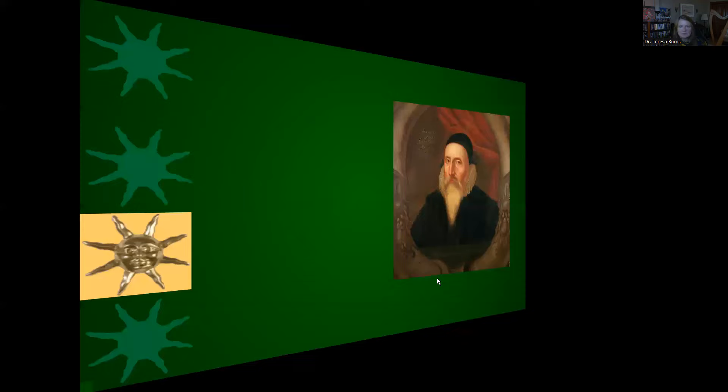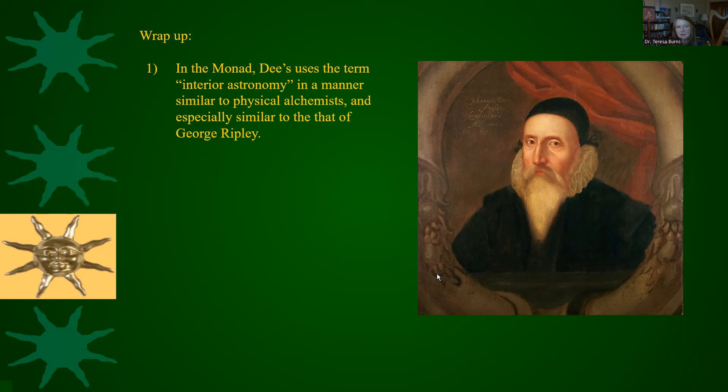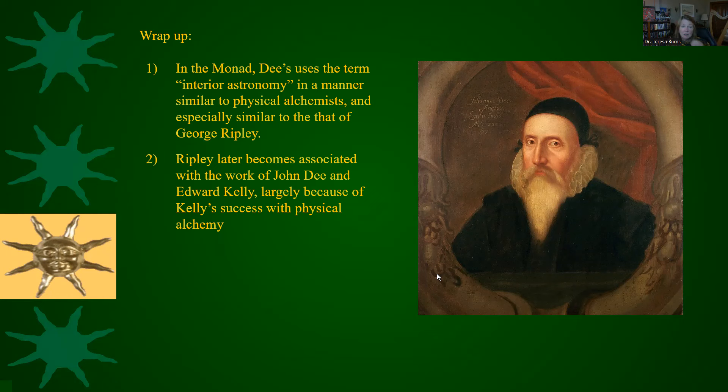What should one take away from this rather advanced supplemental class on the Hieroglyphic Monad? Dee uses the term inferior astronomy in a manner similar to physical alchemists, especially similar to that of George Ripley. Ripley later becomes associated with the work of John Dee and Edward Kelly, largely because of Kelly's success with physical alchemy — this is according to Rampling, and I'll give you the citation in the final slide.